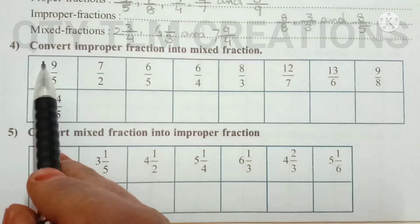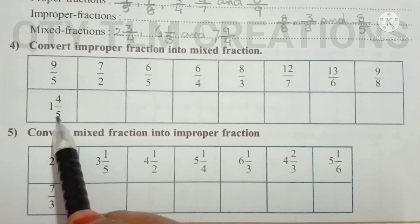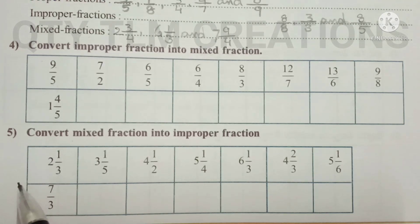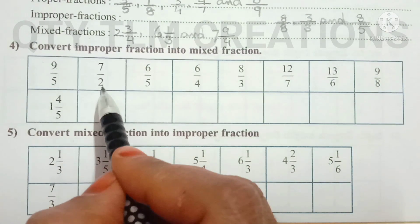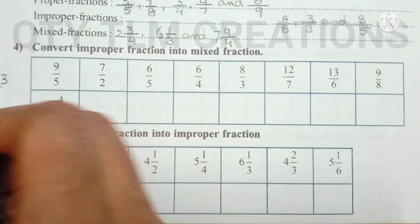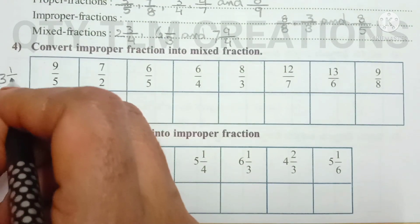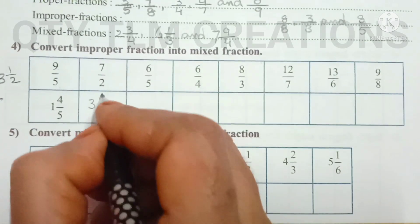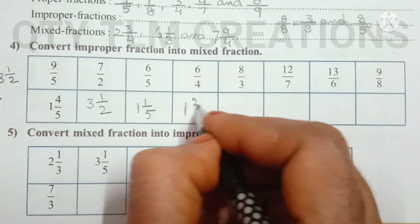Next question: convert improper fractions into mixed fractions. For example, 9/5 becomes 1 and 4/5. When an improper fraction is converted into a mixed fraction, the quotient forms the whole number part, while the remainder over the divisor gives the fraction part. For 7/2: 2 goes into 7 three times (6), remainder 1, so the answer is 3 and 1/2. Similarly: 1 and 1/3, 1 and 1/2, 1 and 1/5, 1 and 2/4.